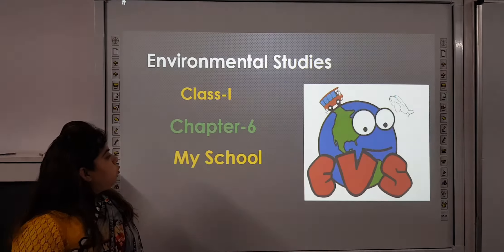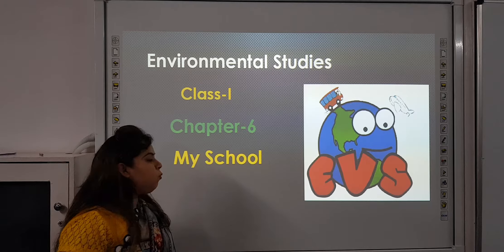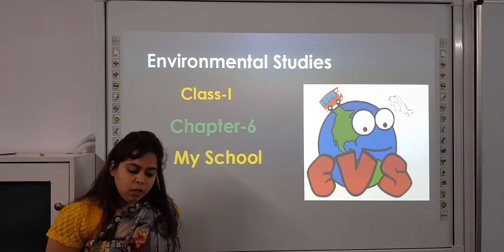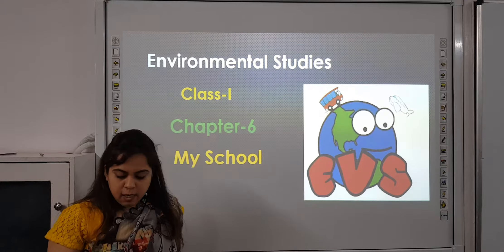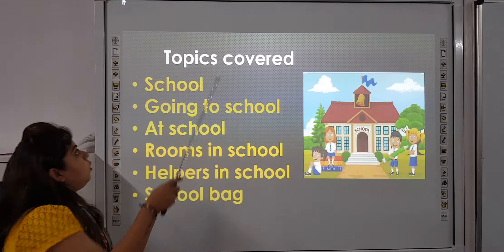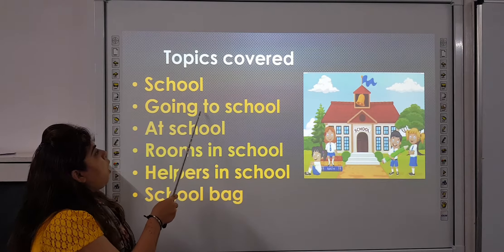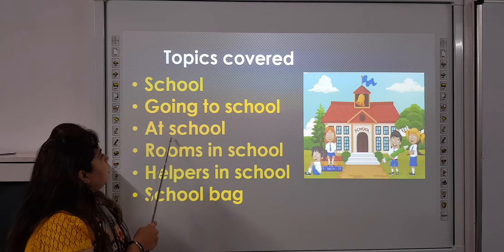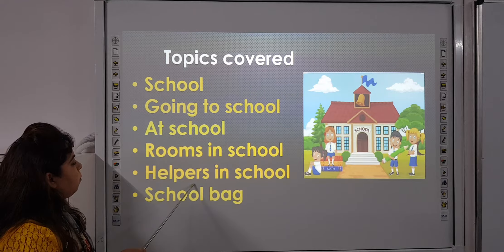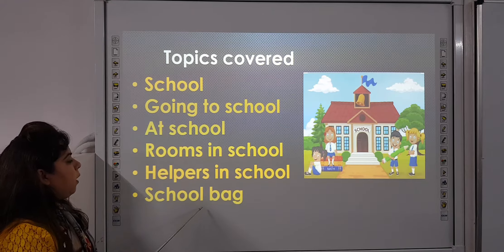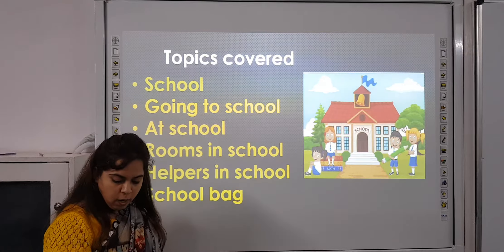Students, today we are here to discuss book work of chapter number 6, My School. Before discussing book work, we will revise what we have learnt in this chapter. Topics covered: what is school, how do we go to school, what do we do at school, different rooms in school, helpers in school, and school bag. Now we will see each topic one by one.